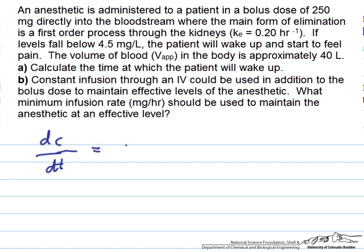So dc/dt is equal to the net rate of formation of our anesthetic. After that initial bolus dose, we aren't really putting any more of our anesthetic in, so this is just equal to the rate of elimination, which is through a first-order process, elimination process of ke times the concentration.